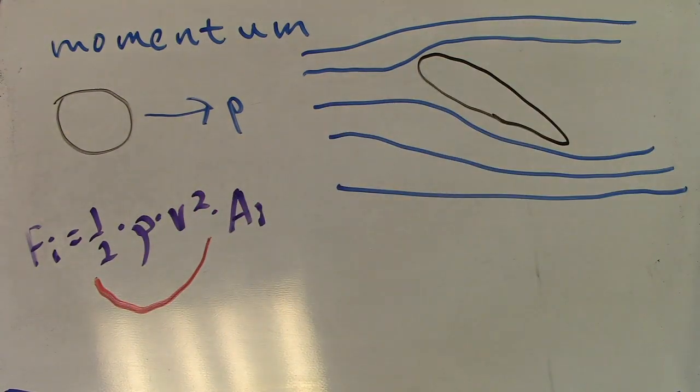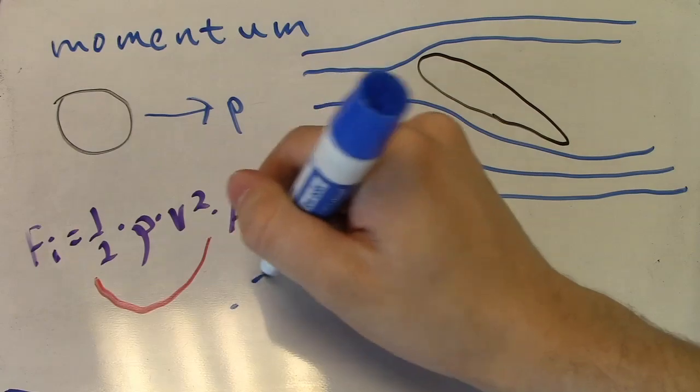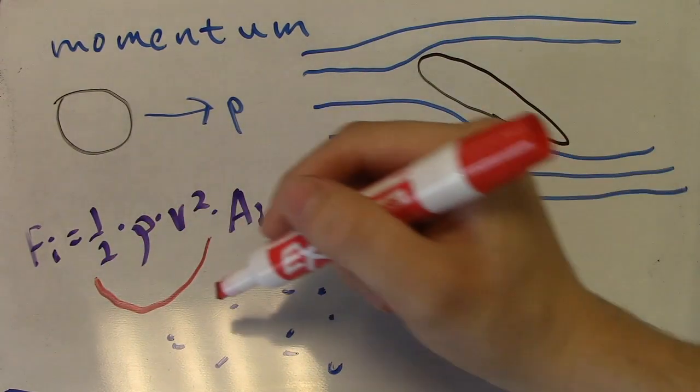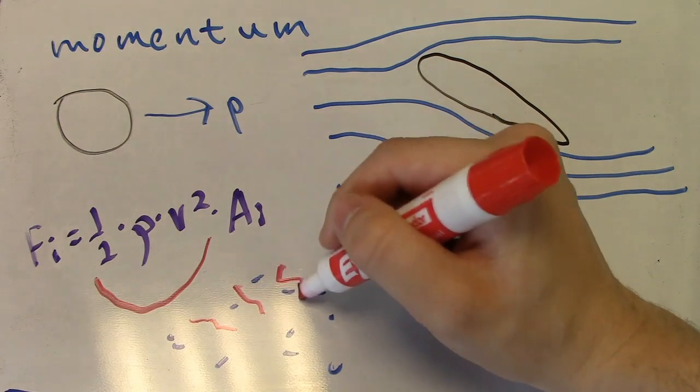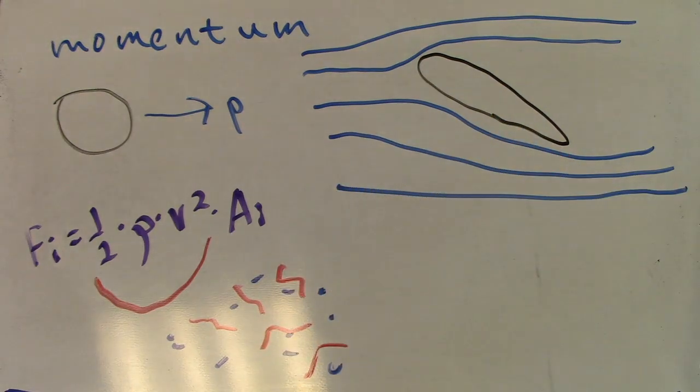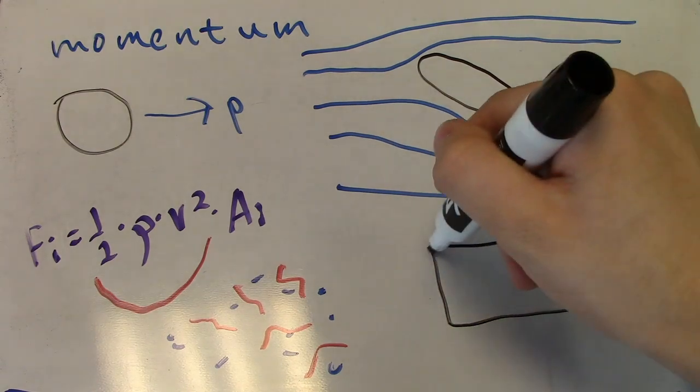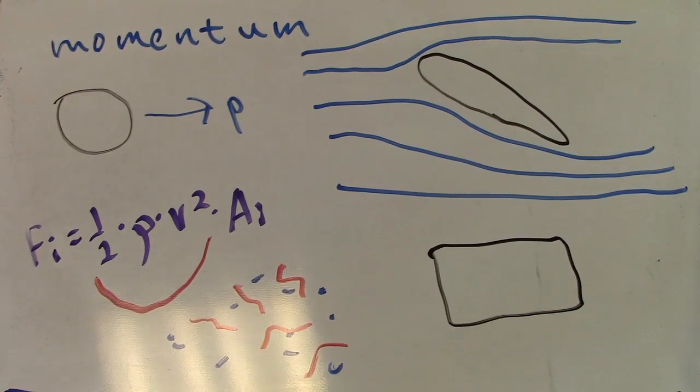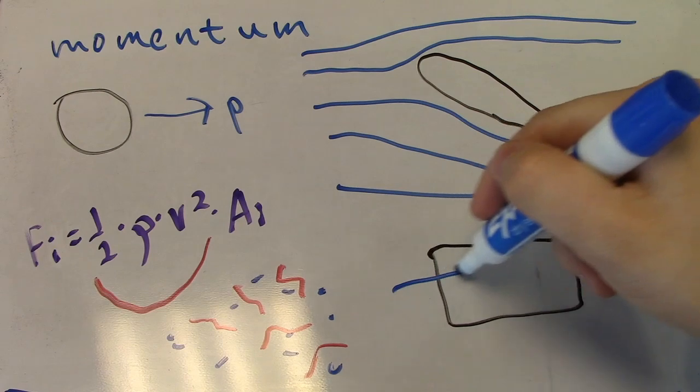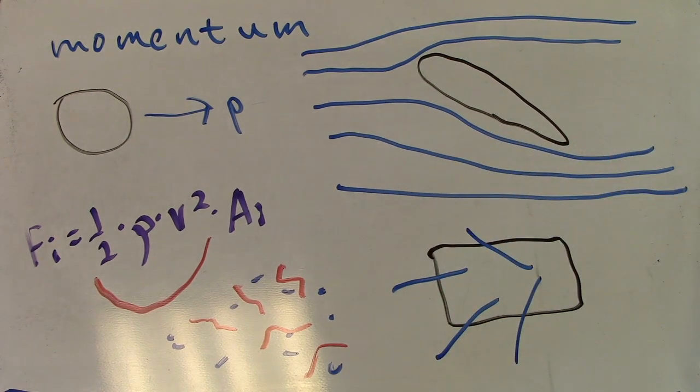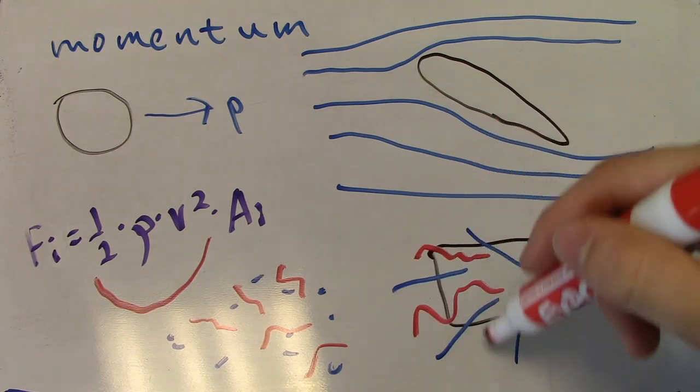One half rho v squared is the dynamic pressure, which is a measure of energy per unit volume of air, i.e. how energetic a section of air is. We multiply this by the area that the air hits against to get how much energy is expended over a given distance. Energy expended over a given distance is just another way to describe force.